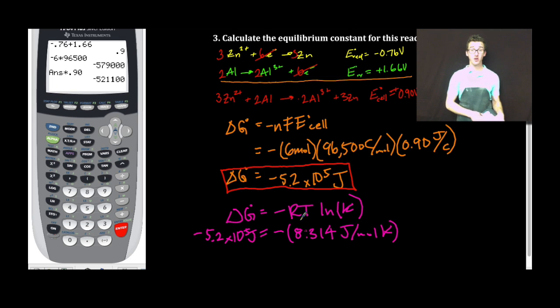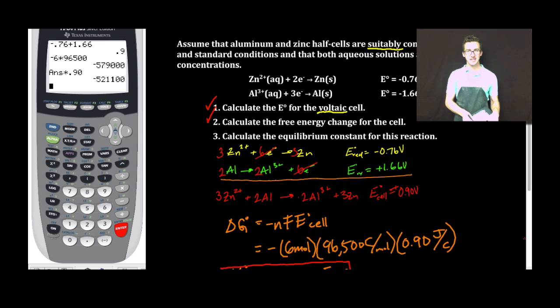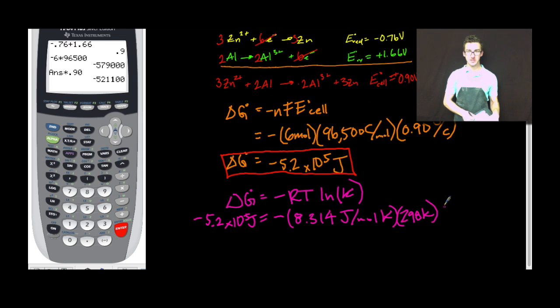Be careful. There are a lot of R values on your formula chart. My temperature in Kelvin is 298 times the natural log of my equilibrium constant, which is what I'm solving for. All right, so let's math it up a little bit.